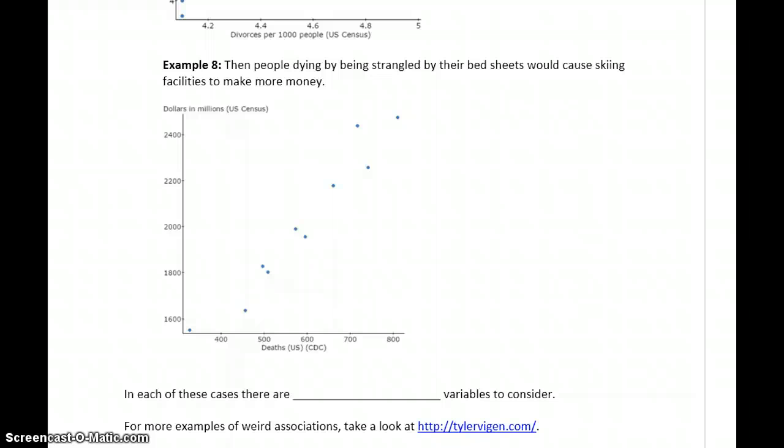Or people dying by being strangled by their bedsheets would cause skiing facilities to make more money. We've got a very strong positive linear association between these variables. But people dying accidentally in their beds probably has absolutely nothing to do with how much money is made by ski facilities and ski slopes.